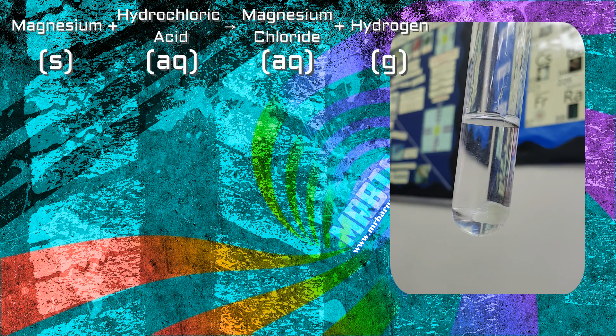So if we have a look at the reaction between magnesium and hydrochloric acid then, as you can see here I've got hydrochloric acid in my boiling tube and I'm going to add some magnesium to it.